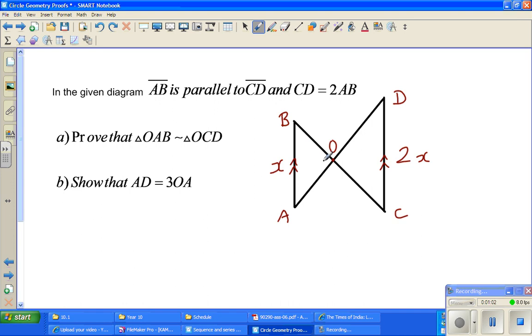So if I can prove that each angle of this triangle is congruent to some corresponding angle in triangle OCD, then I can say that these two triangles are similar. One thing that stands out very clearly is these two angles are vertically opposite angles, so these two angles are equal because they are vertically opposite angles.